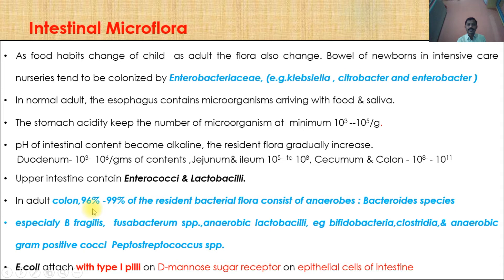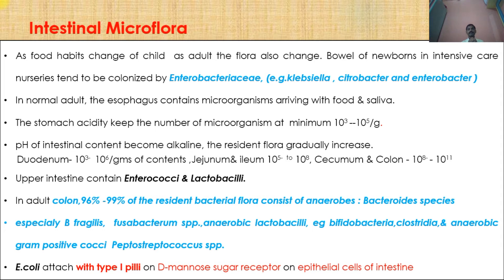In adults, the colon contains 96–99% anaerobes as the resident bacterial flora — meaning the permanent fixed flora consists of anaerobes — including Bacteroides species, especially Bacteroides fragilis, Fusobacterium species, anaerobic lactobacilli, Bifidobacterium, Clostridia, and anaerobic gram-positive Peptostreptococcus species. These bacteria attach to the epithelial lining with the help of hydrogen molecules, pili, or capsules, and sometimes form a biofilm. For example, E. coli in the colon attaches via type 1 pili to D-mannose receptors on intestinal epithelial cells.